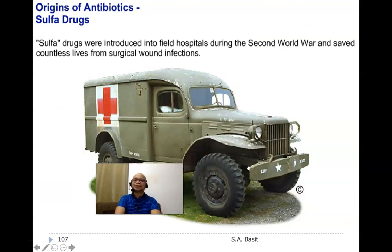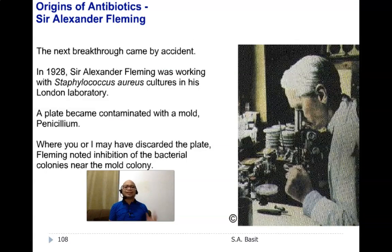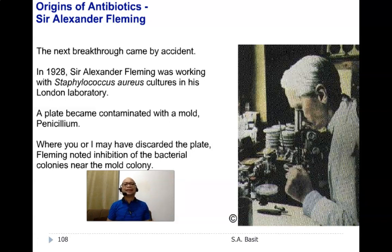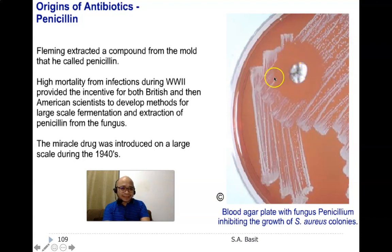Sulfa drugs were introduced into field hospitals during the Second World War and saved countless lives. And one of the greatest discoveries of the 20th century was that of Sir Alexander Fleming. In 1928, Fleming was working with Staphylococcus cultures in his laboratory in London. He did not discard his plates right away, and they became contaminated with a mold known as Penicillium. He discovered that this Penicillium mold developed a zone of inhibition — the surrounding bacterial colonies were inhibited.